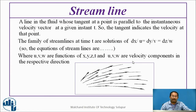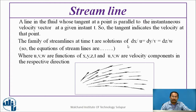The stream line is a line in the fluid whose tangent is parallel to the instantaneous velocity vector at the given instant time t. So the tangent indicates the velocity at that point. The family of stream lines at time t are the solutions of dx/u = dy/v = dz/w, where u, v, w are the velocity components in the x, y, z directions respectively.